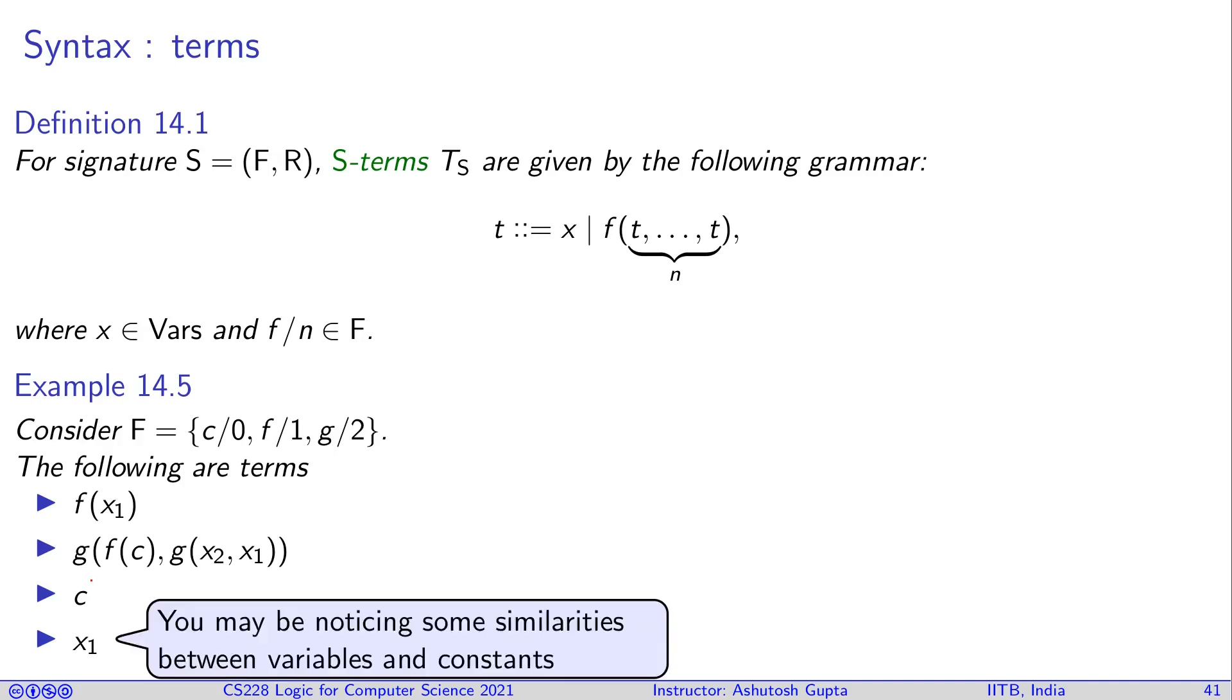It may be an interesting observation that constants and variables behave in a very similar way. But there's a fundamental difference: you cannot quantify over constants, but you can quantify over variables. That's the only difference.